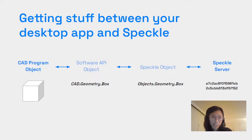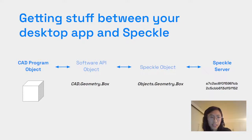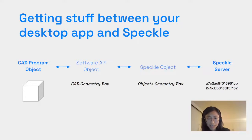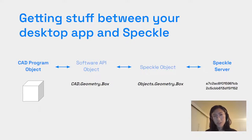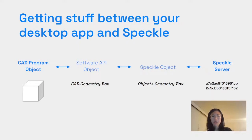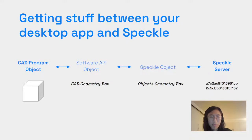Basically we're trying to figure out how to get stuff between your desktop applications and Speckle and back again. Generally we have a CAD program object — geometry objects or other objects in whatever desktop application you're using — and those objects can be retrieved via code through your software API. We focus on designing Speckle objects converted from your software API objects, and then sending and storing them. Whenever you send an object from a connector, say from Rhino to Revit, you go through this process.